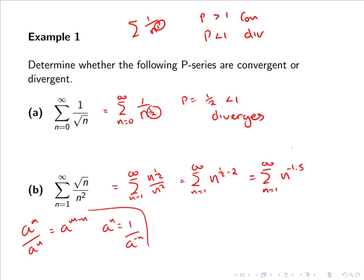If we express this in the form 1 over n to the power of p, we have the sum from 1 to infinity of 1 over n to the 1.5. In this case p equals 1.5, which is greater than 1, and so the series converges.